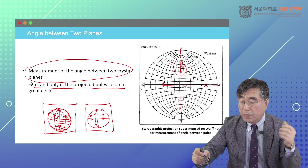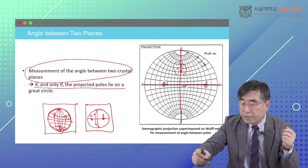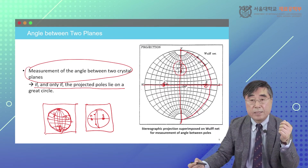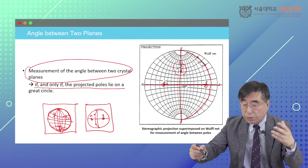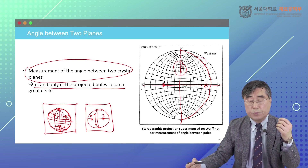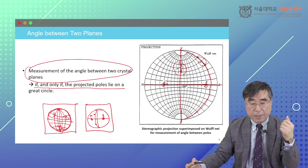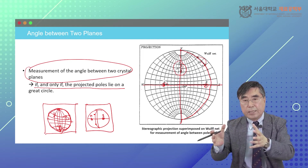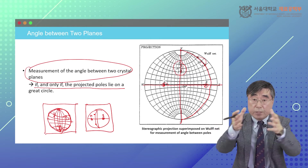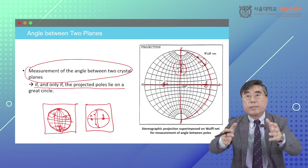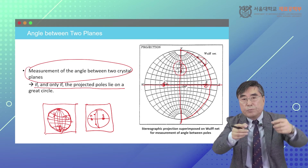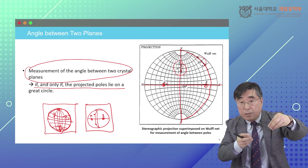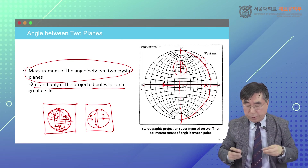So if you have a stereo projection and you use the same-size Wulff net, you move the Wulff net around and put the two poles you want to measure on a great circle, then you can measure the angle between them by using the Wulff net.